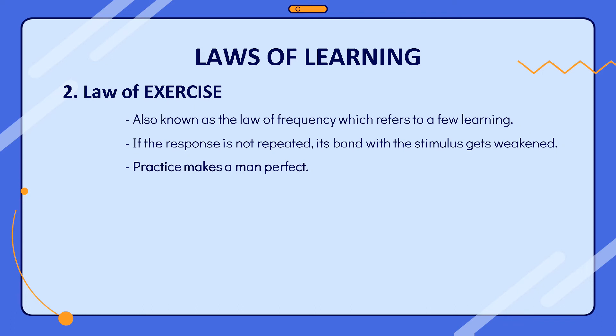The law of exercise is also known as the law of frequency. Frequency refers to the number of repetitions of learning. Thorndike believed that repeated exercising of a response strengthens its connection with the stimulus. This refers to the law of use and disuse, which explains that anything not in use will perish. If the response is not repeated, its bond with the stimulus gets weakened. This is according to the statement that practice makes man perfect. In Thorndike's experiment, the cat becomes perfect after repeating the response many times, learning to open the door without committing any error.